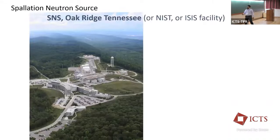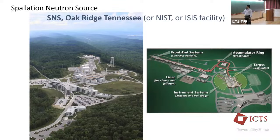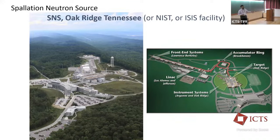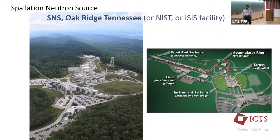Most of the measurements I will show are done at the Spallation Neutron Source in the beautiful mountains of Tennessee. There is also a proposal for a second target station which is starting to get built. We will have a lot of neutrons over the next two to four years as systems are being upgraded, and after that hopefully even more. The ESS will hopefully also be online — exciting times.